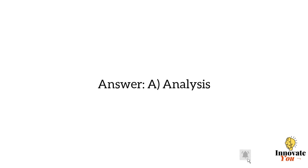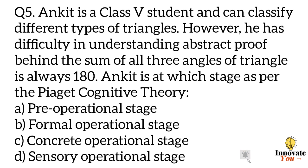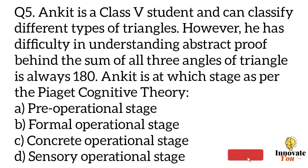Since we read and come to a conclusion and get the answer using analysis, so the answer is Analysis. Question 5. Ankit is a Class 5 student and can classify different types of triangles. However, he has difficulty in understanding the abstract proof that the sum of all three angles of a triangle is always 180 degrees.